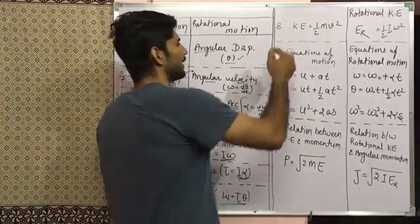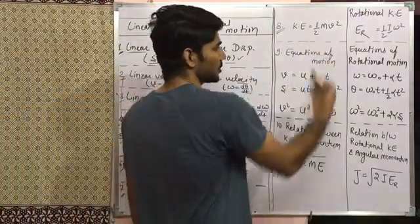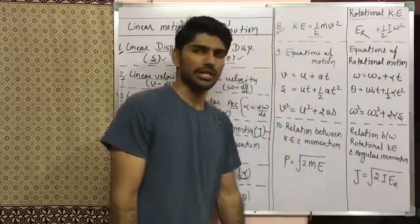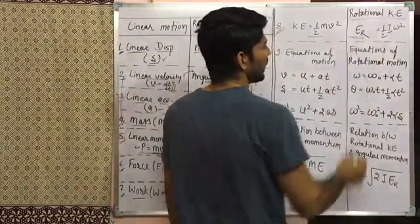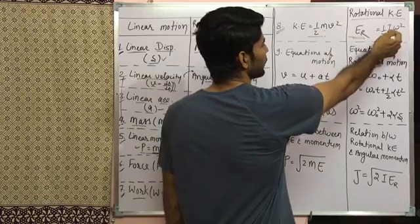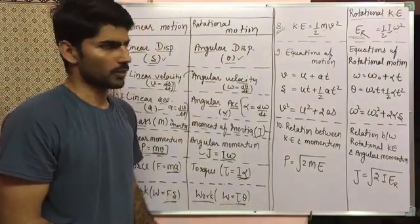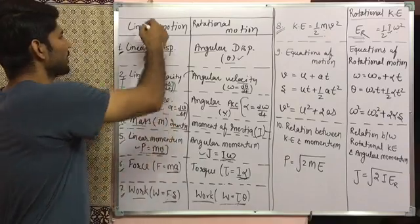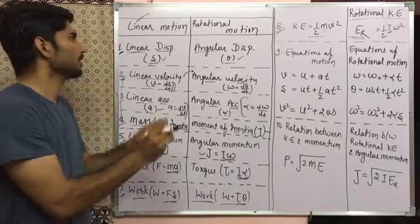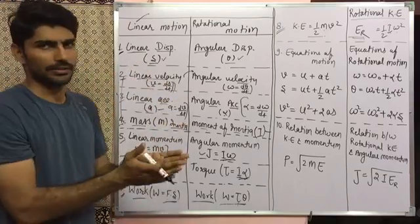The eighth point is kinetic energy. In linear motion, kinetic energy = ½mv², which we all know. In rotational motion, kinetic energy becomes rotational kinetic energy, represented by Er. Just as in linear motion, mass converts to moment of inertia and velocity converts to angular velocity, so Er = ½Iω². You just need to remember the linear motion formulas and you can derive all rotational motion formulas by comparison.